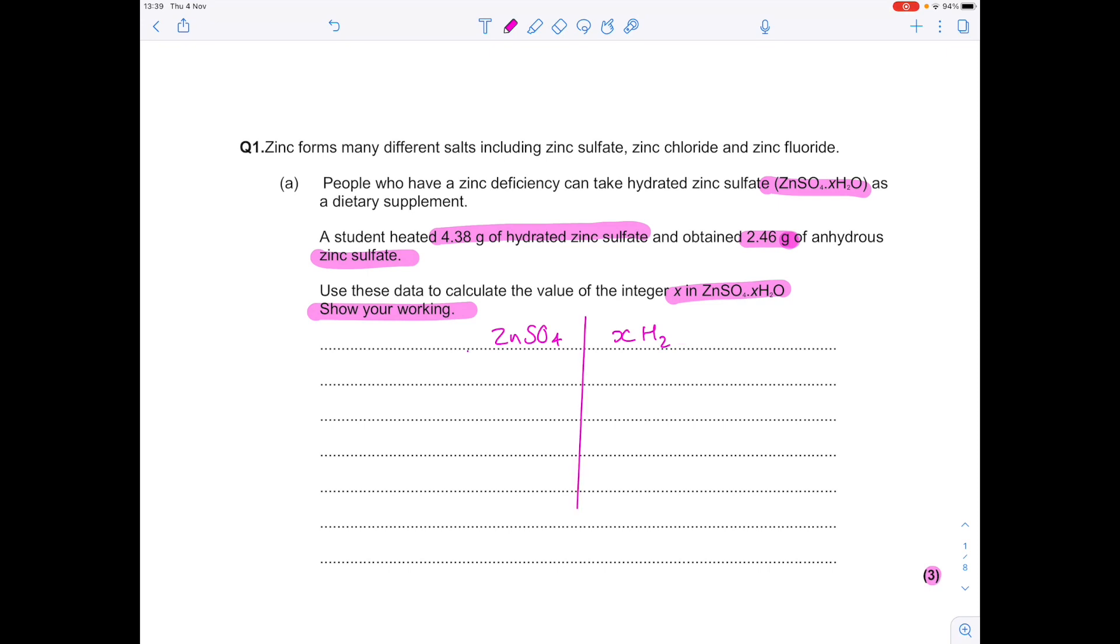Here's that table I was telling you about. And you want to have mass, MR and number of moles as your row headings. Remember that mass is number of moles times MR. So what are our masses? Well, we know that 2.46 of anhydrous zinc sulfate was produced. Remember that's zinc sulfate without water, which is why it's this value here.